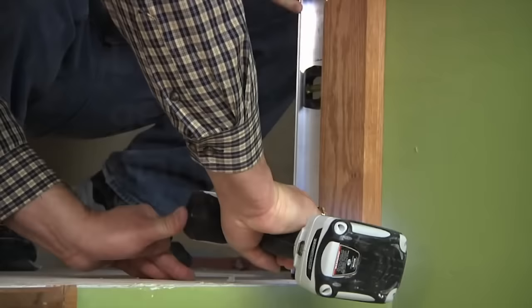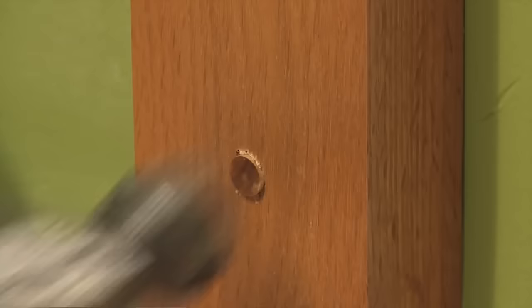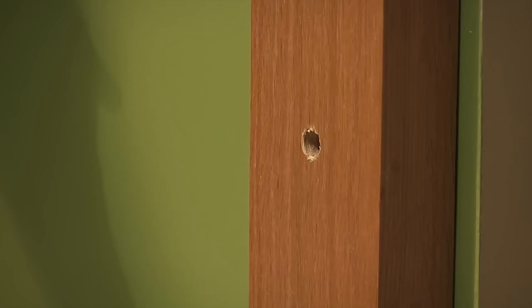First drill pilot holes in the half newel. We're using three inch construction screws to anchor it to the wall studs. The bottom screw is covered with a plug. The top screw is hidden by the handrail.